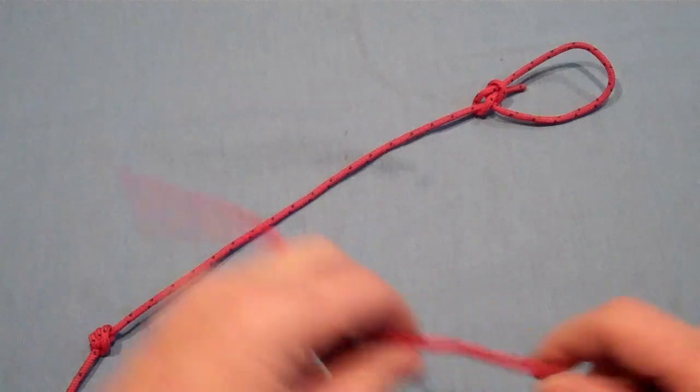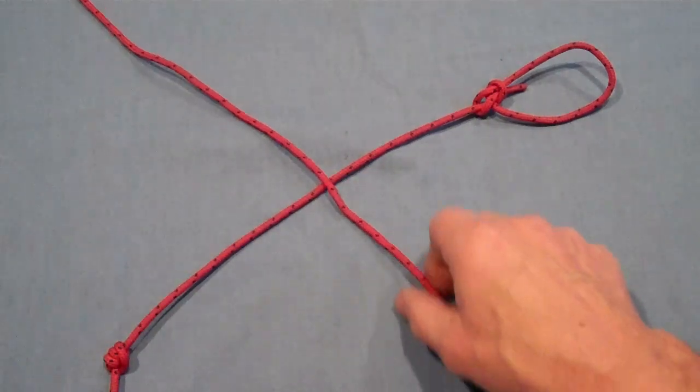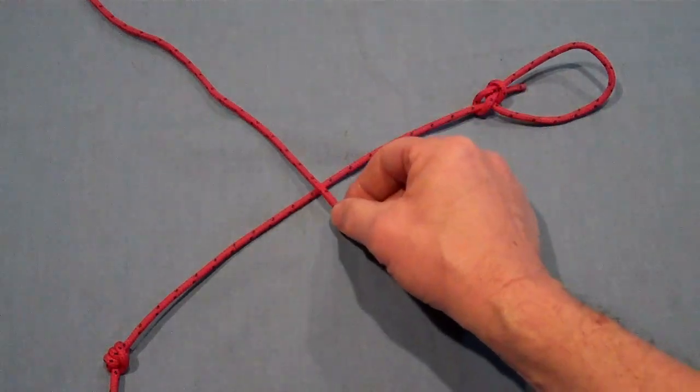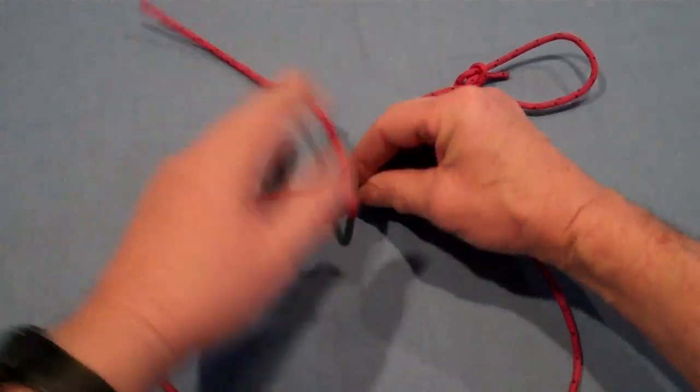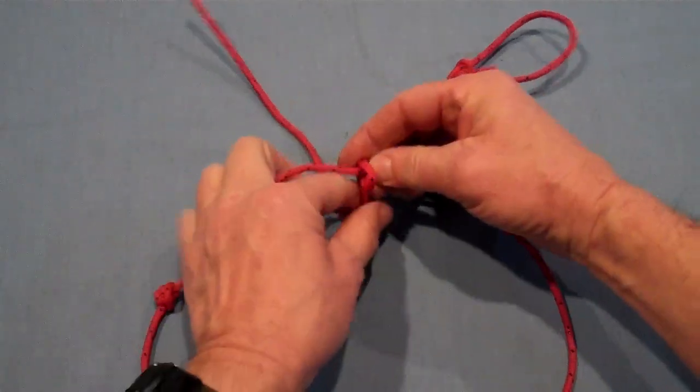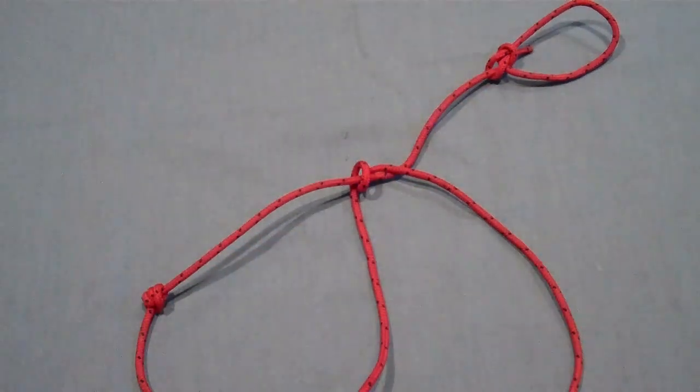Between these two knots, we're going to tie a taut line hitch. We're going to start by putting this over the top, and then taking two wraps around the main line.